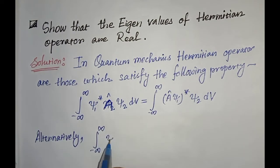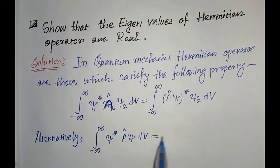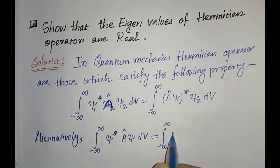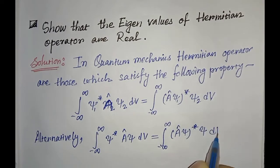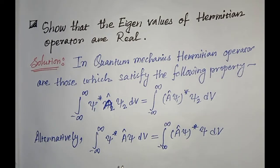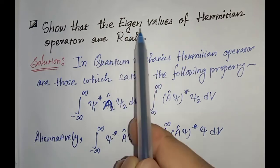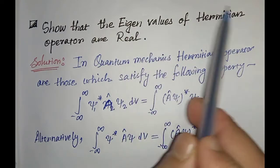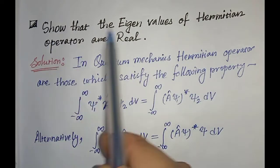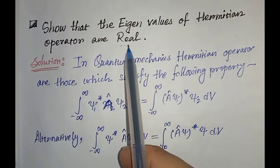Alternatively, we can write it as: the integration from minus infinity to infinity of ψ* A ψ dV equals the integration from minus infinity to infinity of (Aψ)* ψ dV. Now what we have to prove is that the eigenvalues of a Hermitian operator are real.